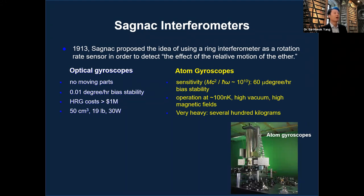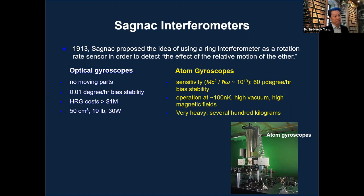Atom gyroscopes can reach sensitivity 10^10 times that of optical gyros, which is remarkable. However, they must operate at extremely low temperatures — for example, 100 nanokelvin — and require high vacuum and high magnetic fields. More recent atom gyroscopes are smaller but still desktop-sized, still requiring high vacuum and low temperature.